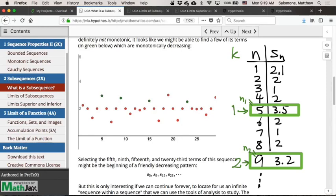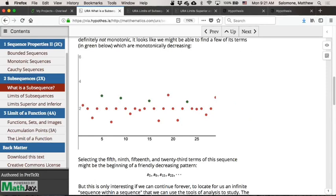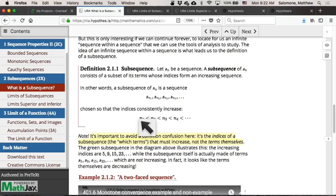So in the definition of subsequence, we require that the indices, the first index of the subsequence, the second index of the subsequence, and so on, that has to be an increasing sequence. So we can't turn around the order of the terms in a parent sequence when we make a subsequence out of it.